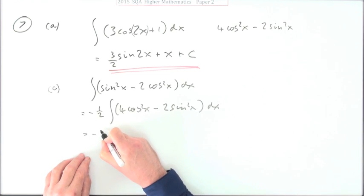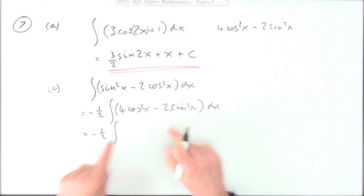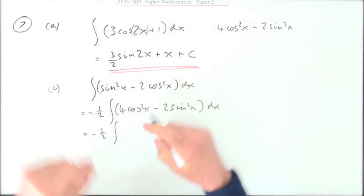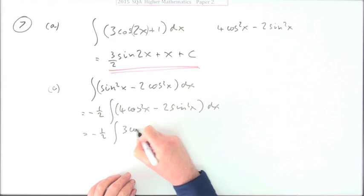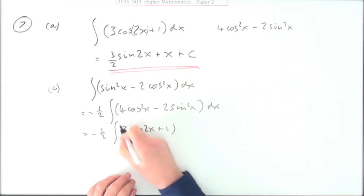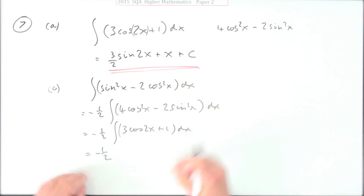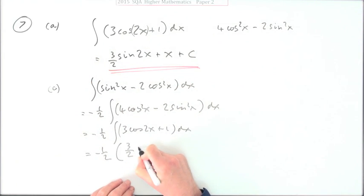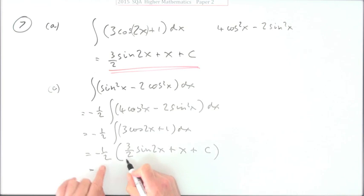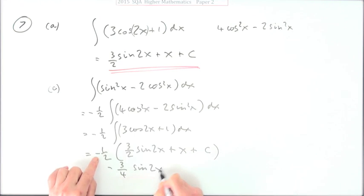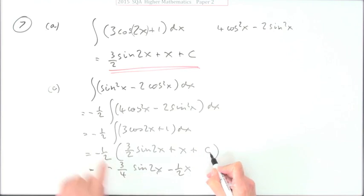And we already had from part b that that thing was equal to this thing, so that was equal to the 3 cos 2x plus 1 dx. And from part a we already had that that was equal to this thing, so that's 3 upon 2 sine 2x plus an x. And then we'll have this little troublesome c, but we'll deal with that in a minute. So we've got negative 3 upon 4 sine 2x, negative a half x.